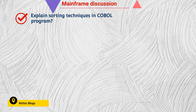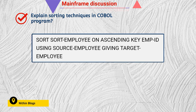In COBOL, we can sort using ASCENDING KEY or DESCENDING KEY. Please see the example in the screenshot for better understanding. For an employee records example: SORT EMPLOYEE ON ASCENDING KEY EMPLOYEE-ID USING SOURCE-EMPLOYEE GIVING TARGET-EMPLOYEE.